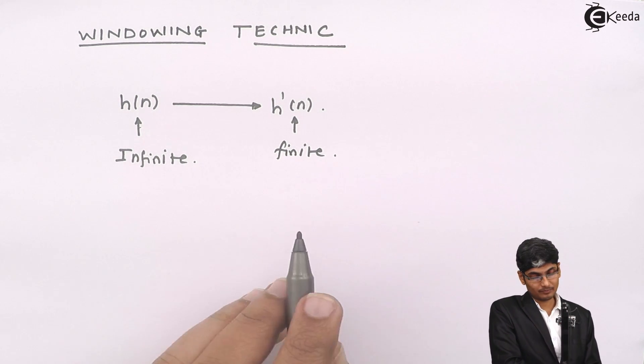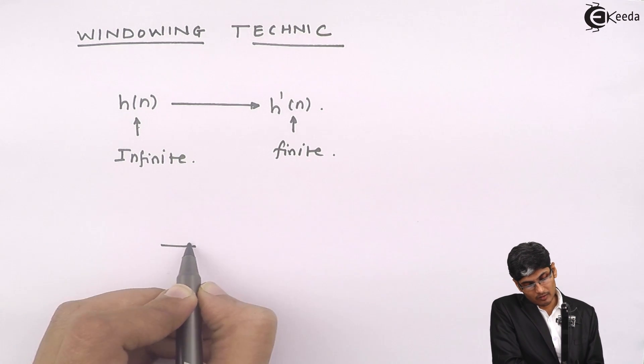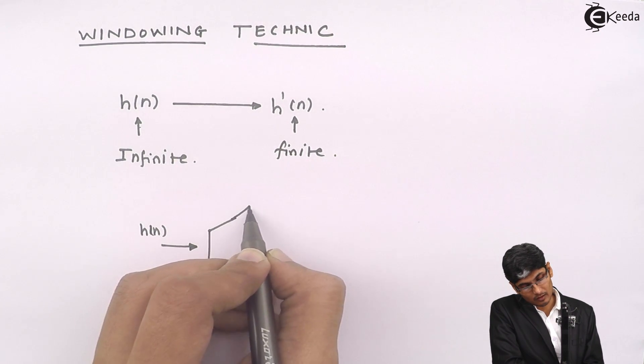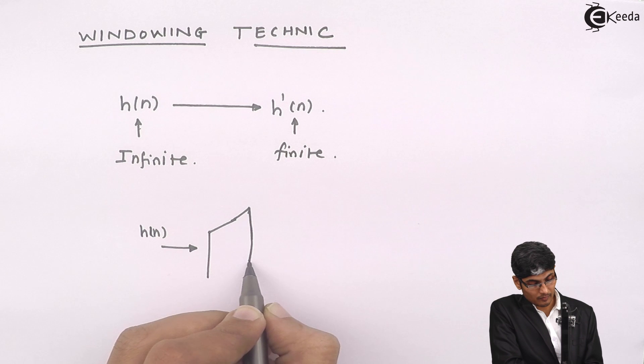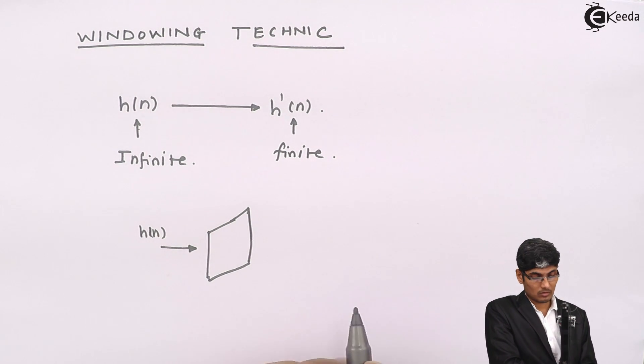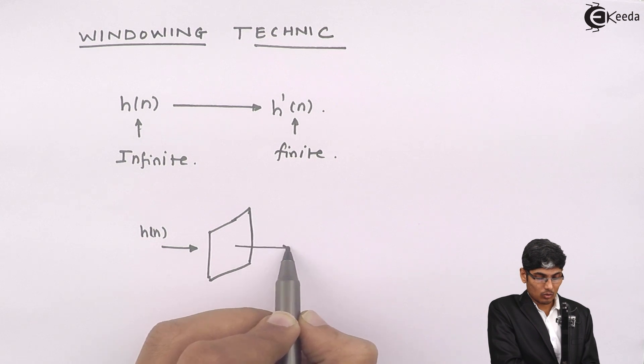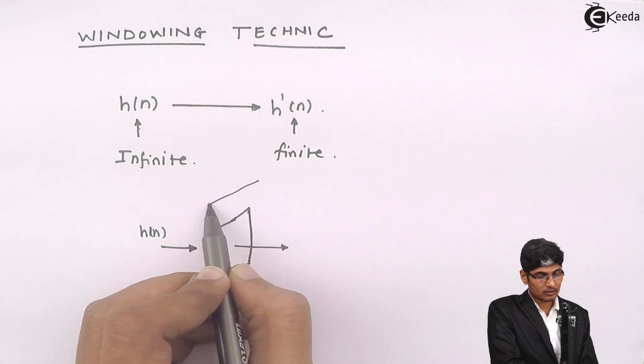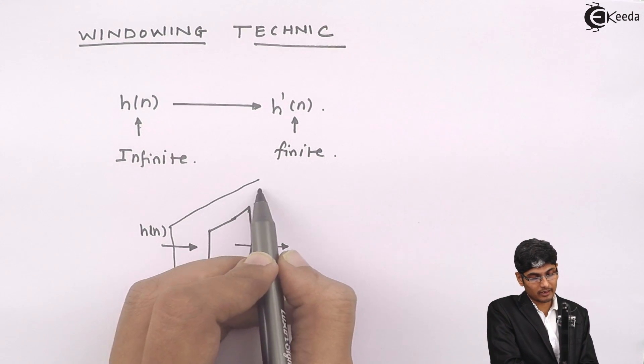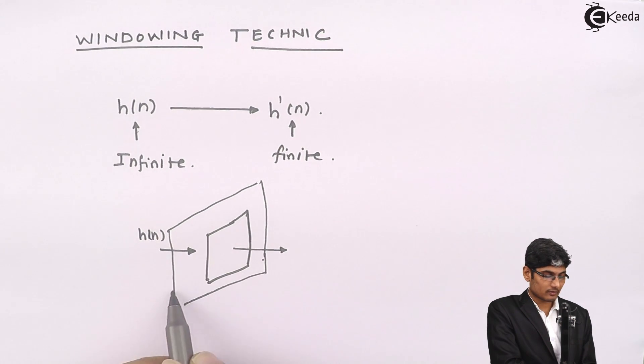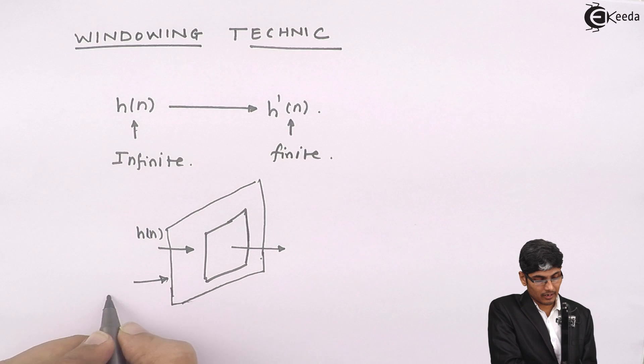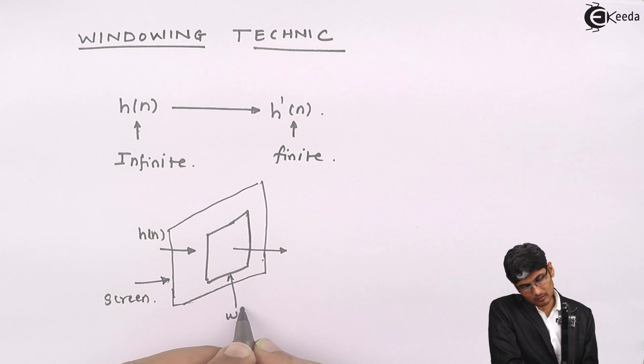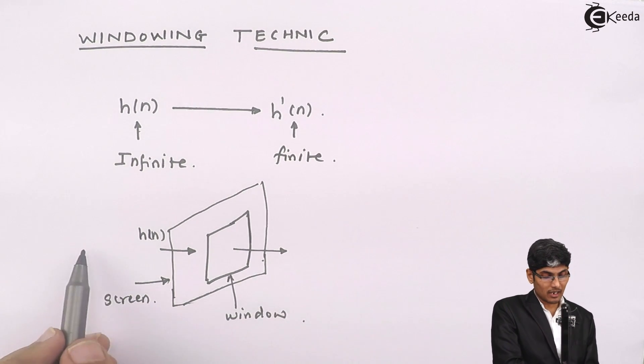How to do this? Basically, I am inputting this h of n through a window. This window will pass only the required number of samples, whereas it will block the rest of the samples. Let's say that this is my screen and this is my window.